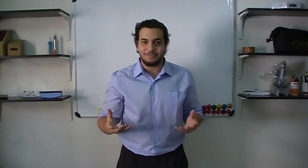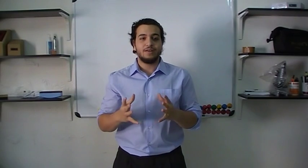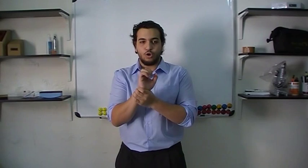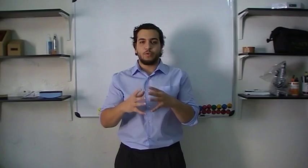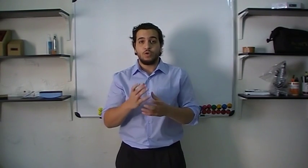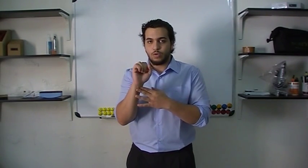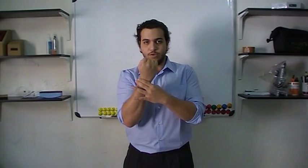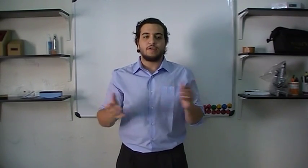The deep fascia also forms retinacula near some joints to hold tendons in place and prevent them from moving too much. We have the flexor retinaculum in the flexor region and the extensor retinaculum in the extensor region, holding all the tendons and carpal bones together.